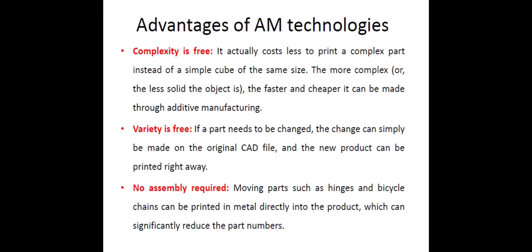Variety is free — any variety of products can be manufactured using additive manufacturing. If a part needs to be changed, the change can simply be made on the original CAD file and the new product can be printed right away. It becomes very easy to modify the data; for example, if you want to increase the diameter or thickness, you can go to the CAD file, make the modification, and the same changes can be inputted to the machine so they get incorporated.